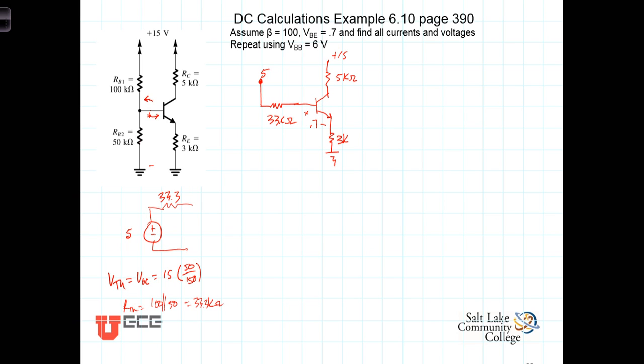We're going to assume that we're in the active region, the linear region, wherein I sub C is equal to beta times I sub B, and I sub E is equal to beta plus 1 times I sub B. So if we can determine I sub B, then we can calculate the emitter voltage, the collector voltage, and we'll also have the base voltage. Once we know the base current here, we can calculate everything we need.